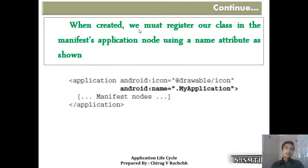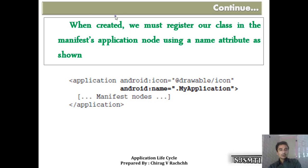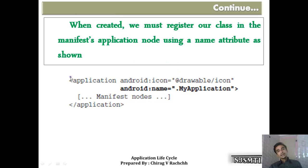When you have created such a class, you need to register it in the manifest file. In the application node of the manifest file, write 'android:name' equal to the name of your class.